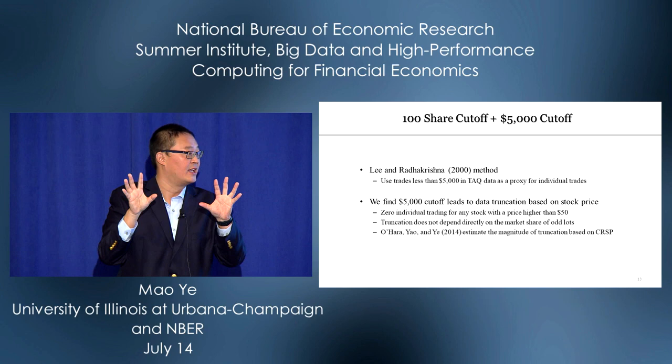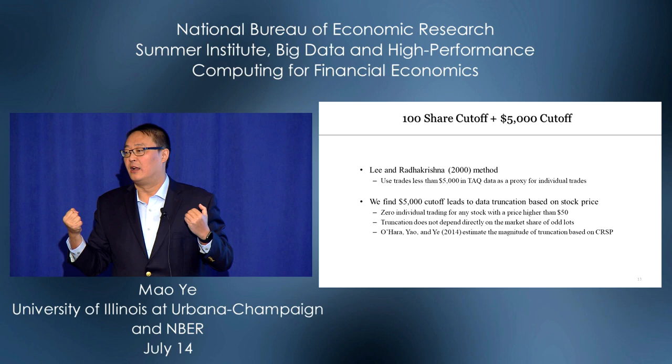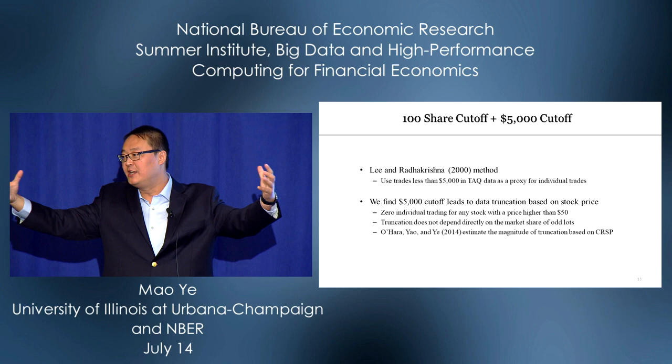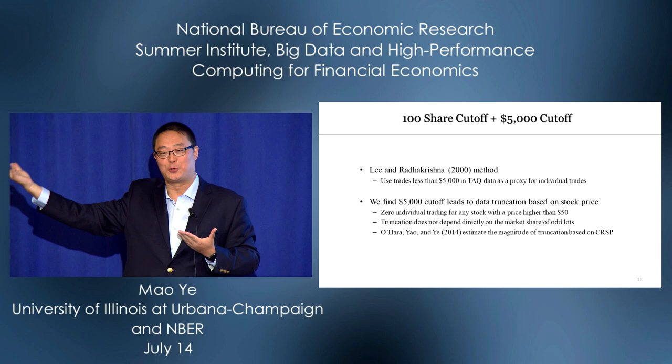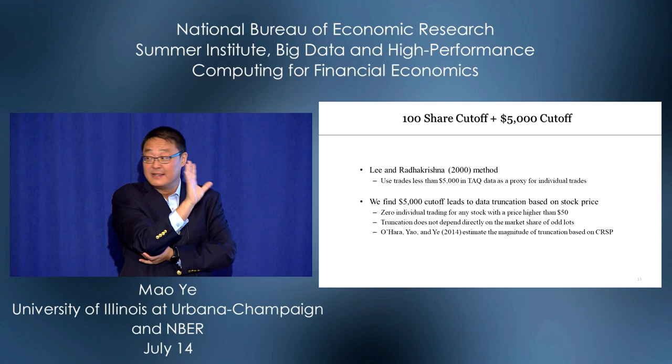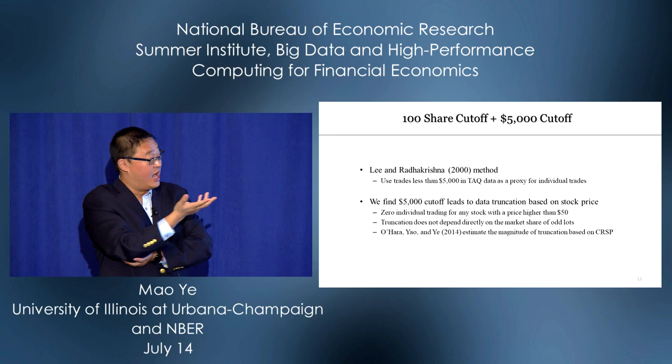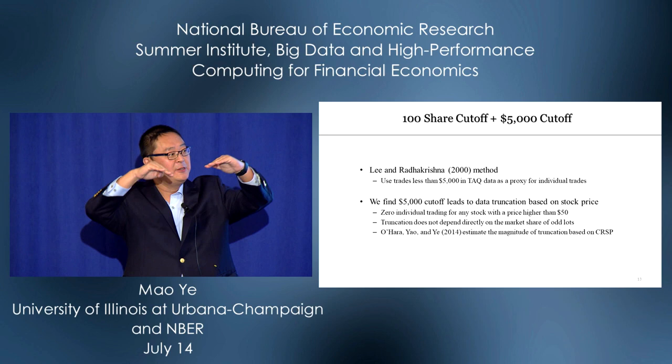There's a difficulty finding a long time series of retail traders. The best proxy was designed by Charles Lee and co-authors: small trades below $5,000 are more likely to come from small traders. But when we realized the 100-shares cutoff, we found that combining two truncations causes problems. If you have a stock with a price above $50, the minimum trade size is 100 shares — meaning you conclude retail traders don't trade those stocks. This is a truncation based directly on price.